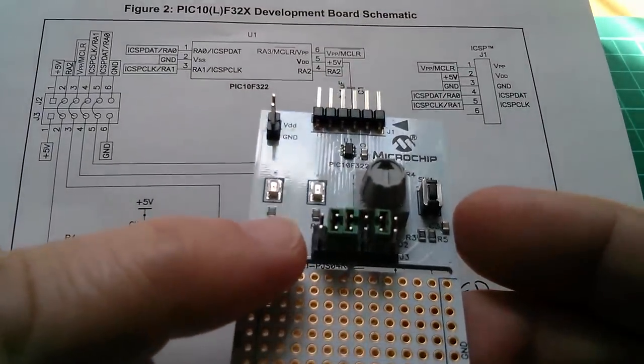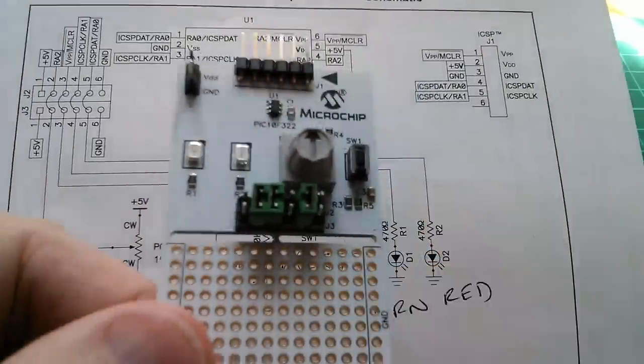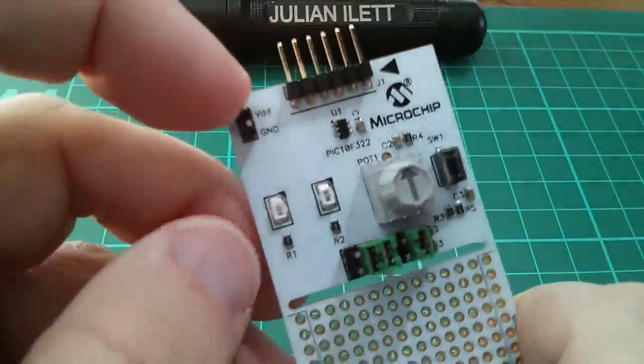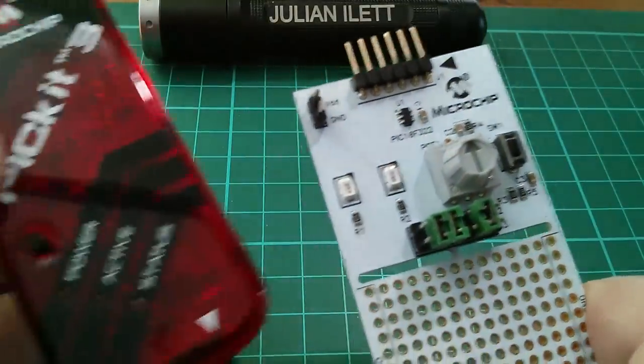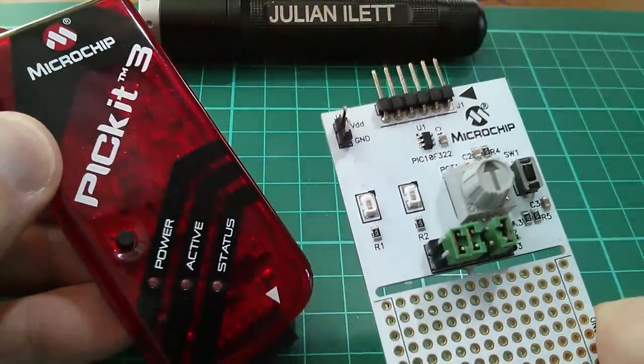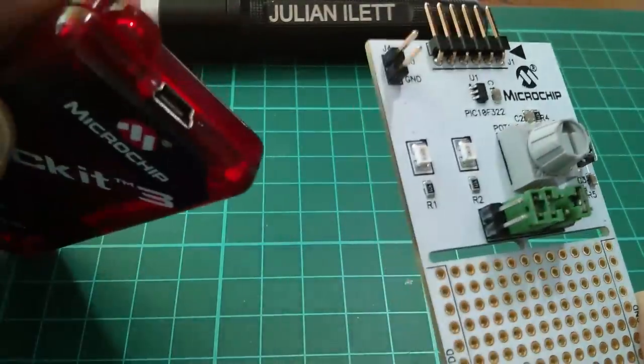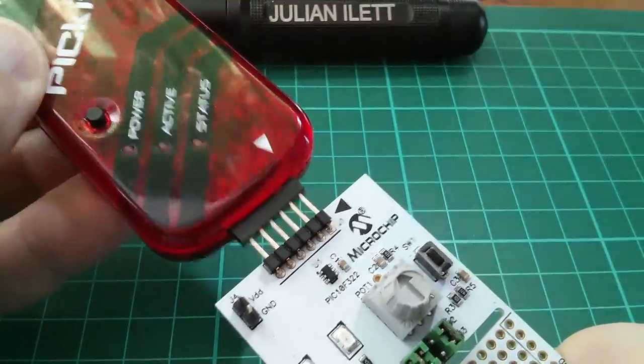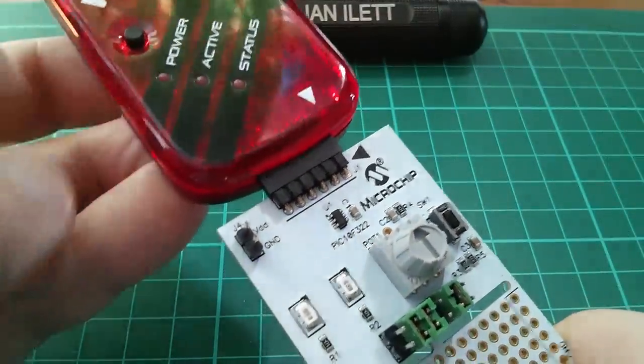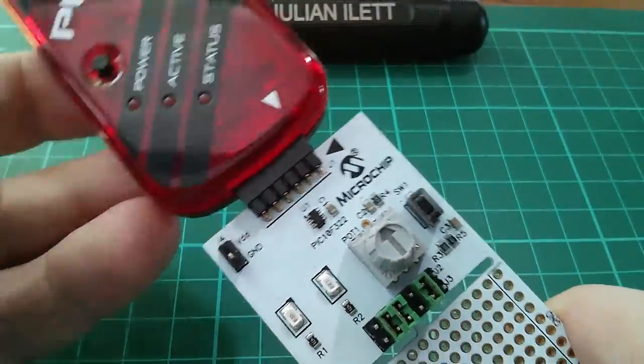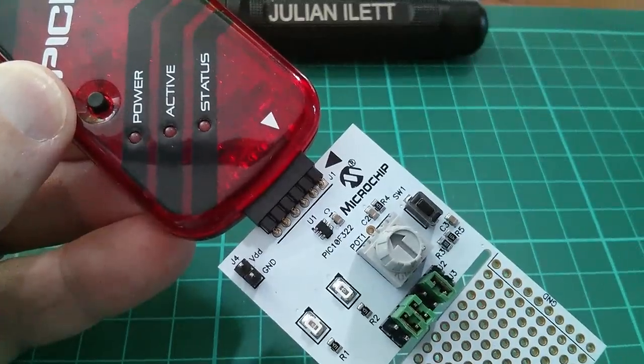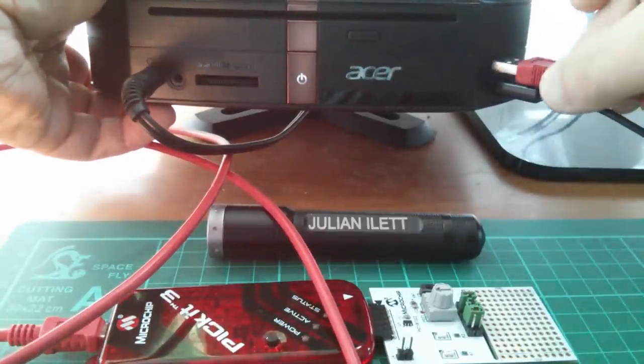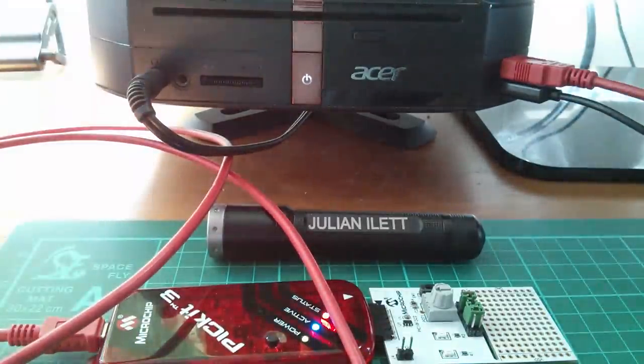So let's have a go at programming this little microcontroller, and for that I'm going to need a programmer. So I'm going to use Microchip's PICkit 3, which is a USB programmer. It's got a mini USB there. This just plugs in directly to the evaluation board. This is a standard Microchip 6-pin ICSP header. And so that plugs into my PC via USB. Other way up. And there we go.